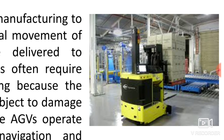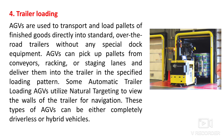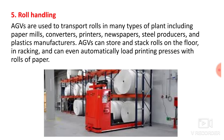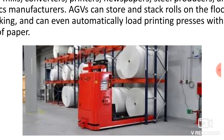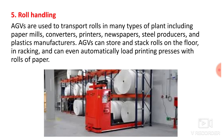The fourth application is trailer loading — AGVs transport and load pallets of finished goods directly into standard over-the-road trailers without special dock equipment. AGVs can pick pallets from conveyors, racking, or staging lanes and deliver them into the trailer in a specified loading pattern. The fifth application is roll handling — AGVs transport rolls in paper mills, converters, printers, newspapers, steel producers, and plastic manufacturers. AGVs can store and stack rolls on the floor in racking, and can even automatically load printing presses with rolls of paper.